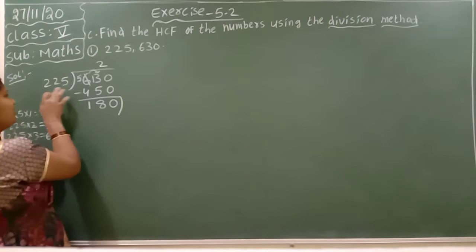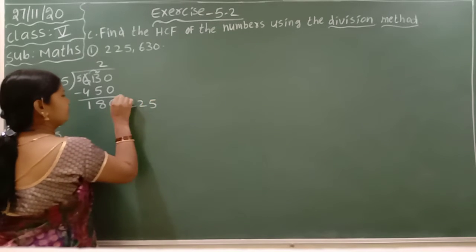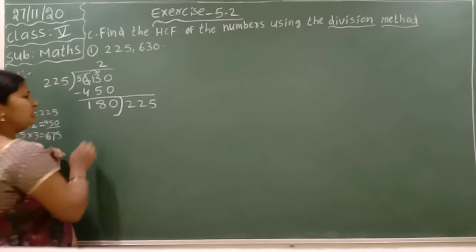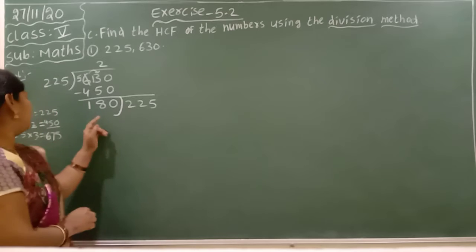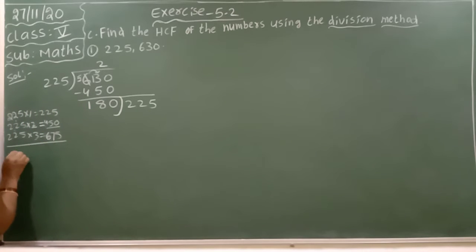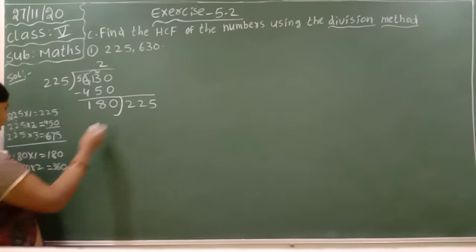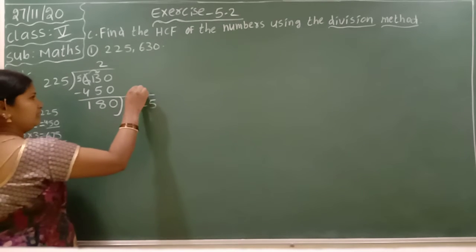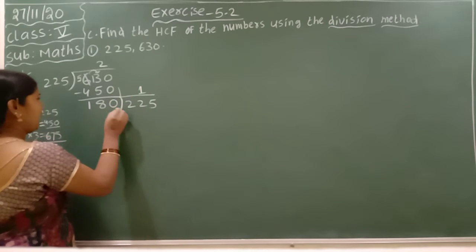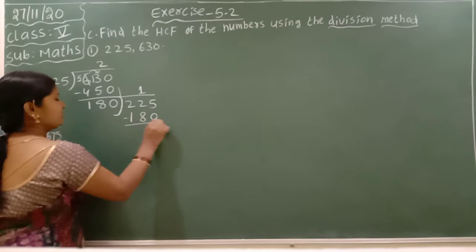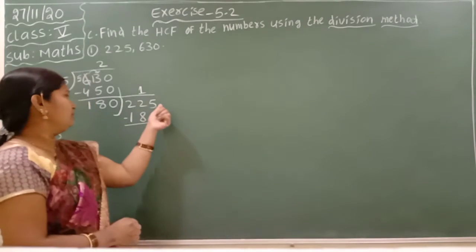For this number, you should write this dividend here. Now you should write 180 to this number. Now we want the 180 table. 180 times 1 is 180. 180 times 2 is 360 (2 times 0 is 0, 2 times 8 is 16, 2 times 1 is 2 plus 1 is 3). But here we have to take 180 times 1.